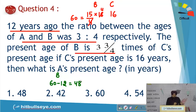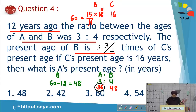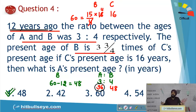The ratio of A to B was 3:4, and B was 48 years ago. If 4 corresponds to 48, then 3 corresponds to 36. But remember, 36 is A's age 12 years ago, not the present age. So A's present age is 36 + 12 = 48 years. That is your answer.